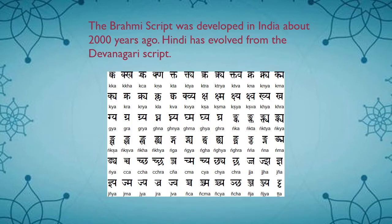The Brahmi script was developed in India about 2,000 years ago, and it is the earliest form of writing system developed in India. Hindi has evolved from the Devanagari script. The image you see is the Devanagari script, which was developed in ancient India and had 47 primary characters or letters. With the help of this script, various languages developed like Sanskrit, Hindi, Marathi, etc.